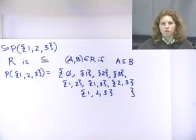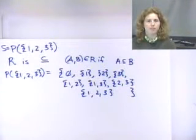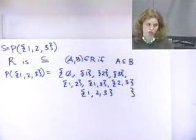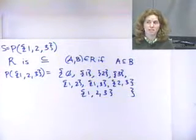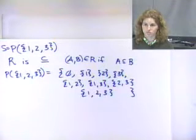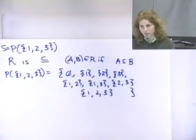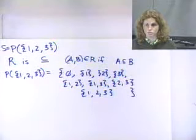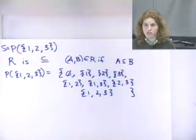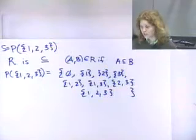Subset, when we did our set theory definitions, is like less than or equal to — we used implication. So your gut instinct should be that this is a partially ordered set, just like less than or equal to or implication. Subset is transitive, reflexive (you're a subset of yourself), and anti-symmetric (if one is smaller than the other, you can't reverse the order). So this is a partially ordered set.